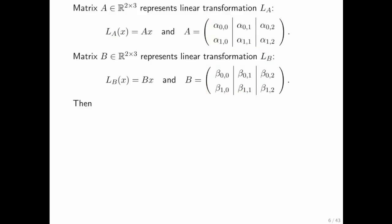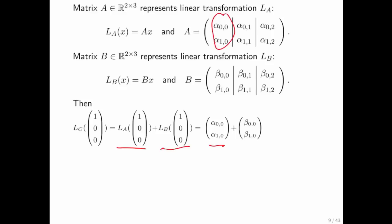Now, what do we do to come up with a possible matrix for LC? In goes the first unit basis vector. You evaluate both LA and LB with the unit basis vector. But we know that this evaluates to the first column of A and this evaluates to the first column of B.